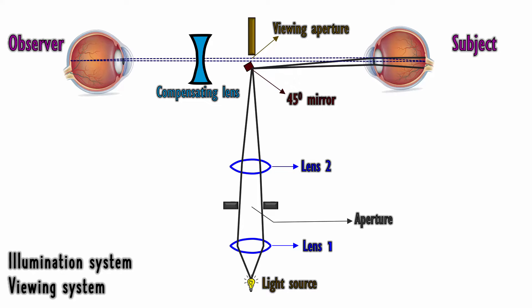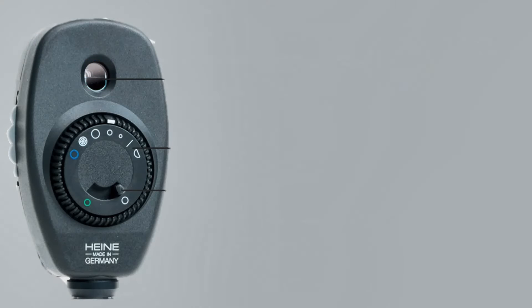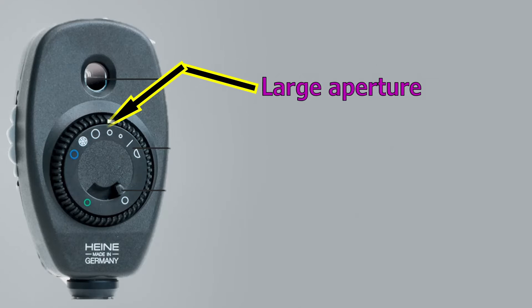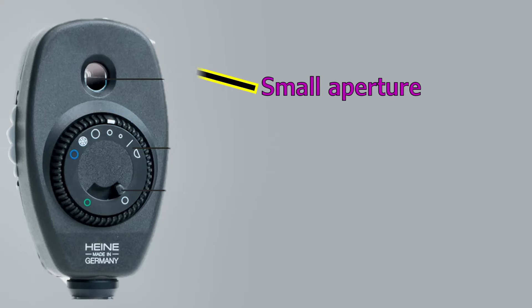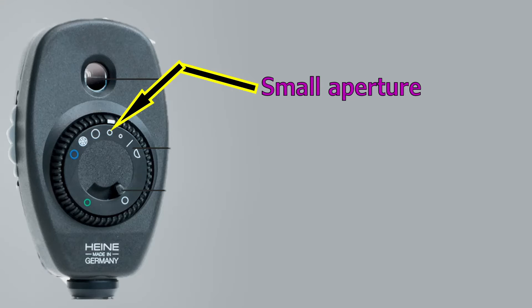The type of aperture can be controlled by means of a thumb wheel. The various apertures available are: a large aperture for standard fundus examination under dilatation, and a small aperture for viewing the fundus through an undilated pupil.